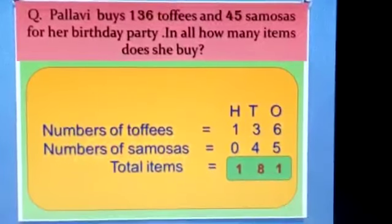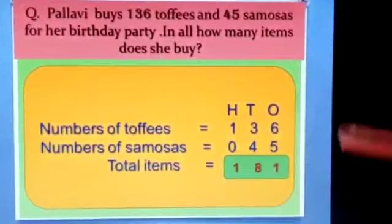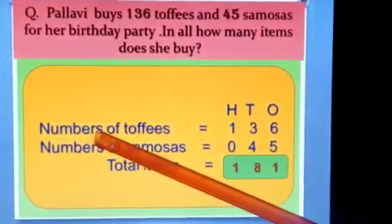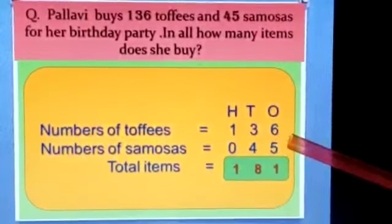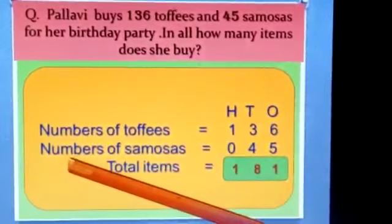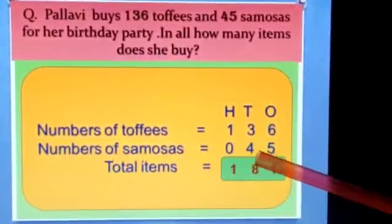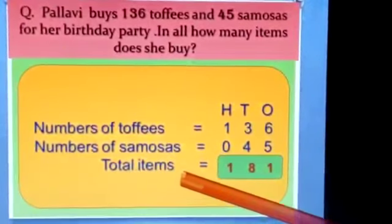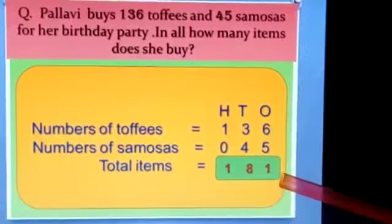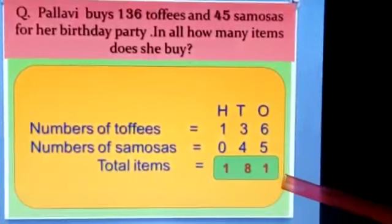So here I need to first write down the total number of toffees. That will be 136 and total number of samosas. That will be 45. Then the total number of items will be 181. So we have to add these numbers.